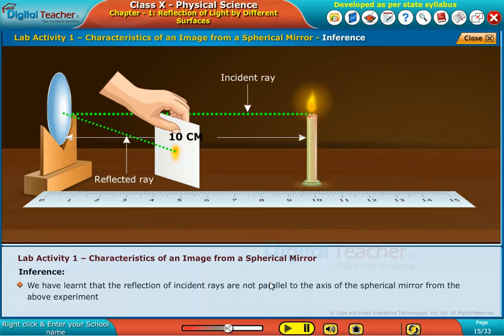Let us find the characteristics of images formed from a spherical mirror with non-parallel incident rays using ray diagrams. Now, let us learn about the ray diagrams in detail.